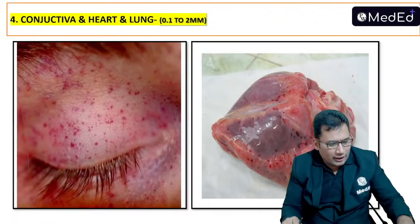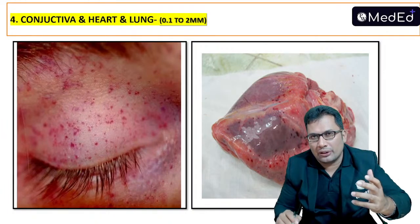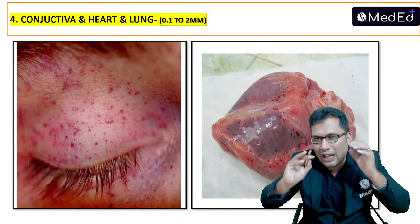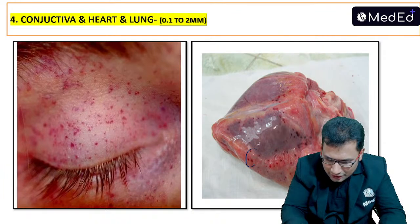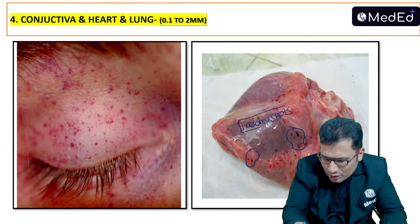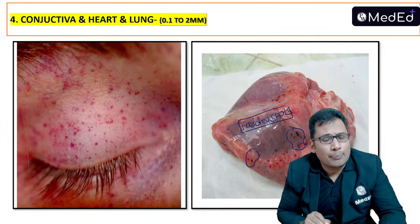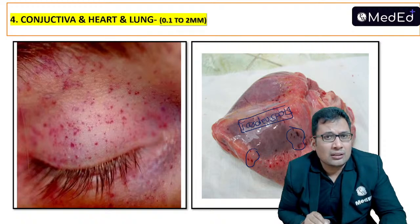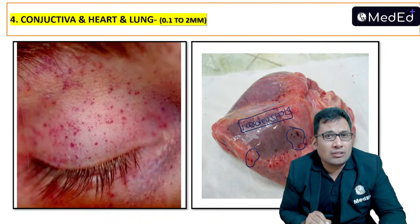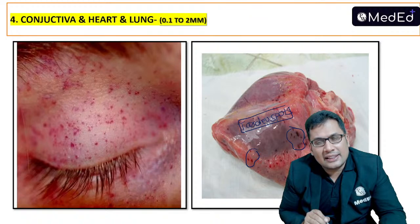Fourth important finding: during post-mortem examination, over the eye or over the heart, petechial hemorrhages can be found — these are known as Tardieu spots. Tardieu spots are non-specific. Previously they were thought to be specific to hanging, but later it was found they can be seen in scurvy, thrombocytopenia, vitamin K deficiency, and DIC. They occur because of venous obstruction in case of hanging.